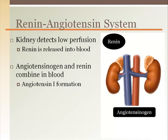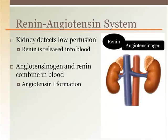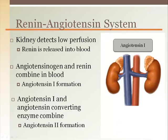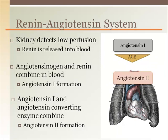Renin then combines with angiotensinogen, which is always circulating in the blood. This combination creates angiotensin 1. Angiotensin 1 is then converted to angiotensin 2 by angiotensin converting enzyme, which is found in the endothelium or tunica intima, mostly in the lungs.